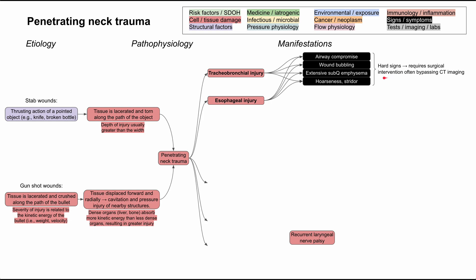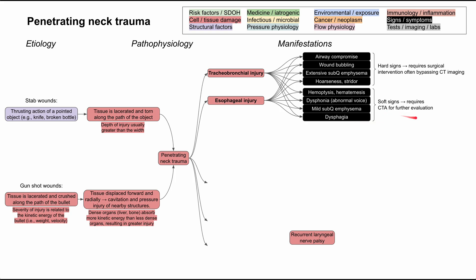These are considered hard signs — very urgent, requiring urgent surgical intervention, and you often bypass imaging when going to surgery. In less severe cases, you can have hemoptysis, hematemesis, dysphonia, mild subcutaneous emphysema, and dysphagia. These are considered soft signs. They're still concerning, but they require a CTA for further evaluation before surgery — do imaging first in this case, whereas with hard signs you go straight to surgery.